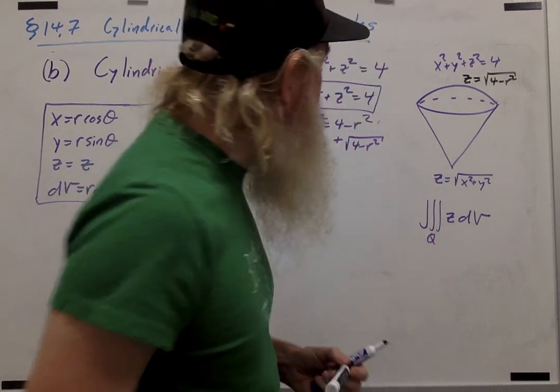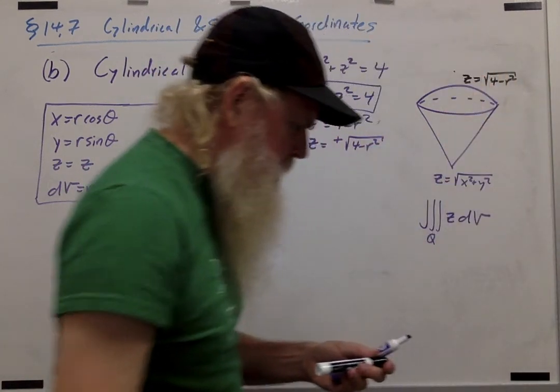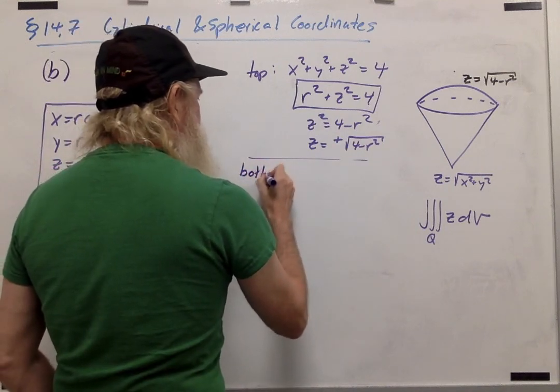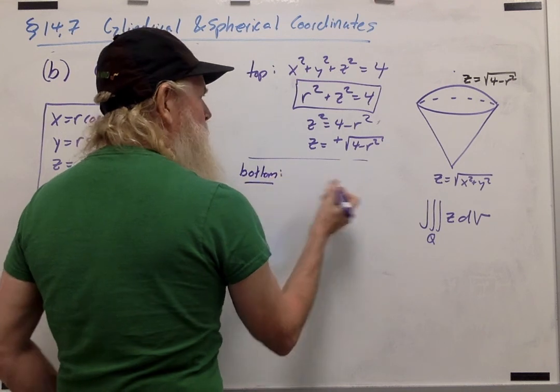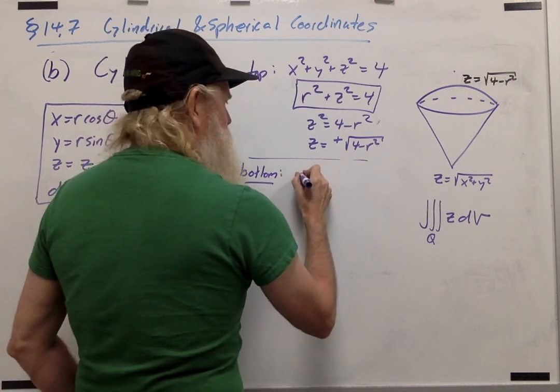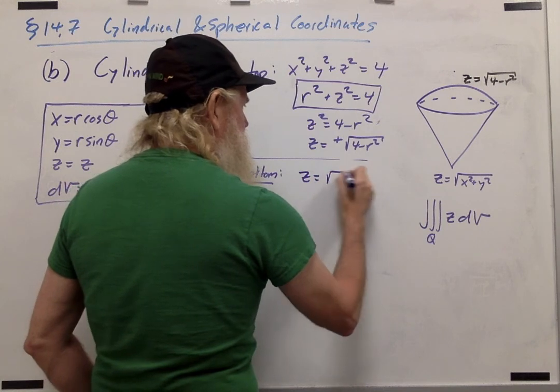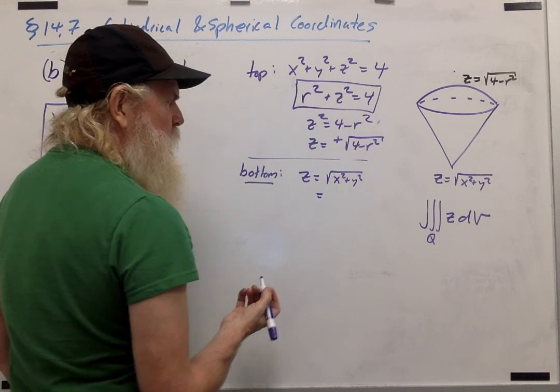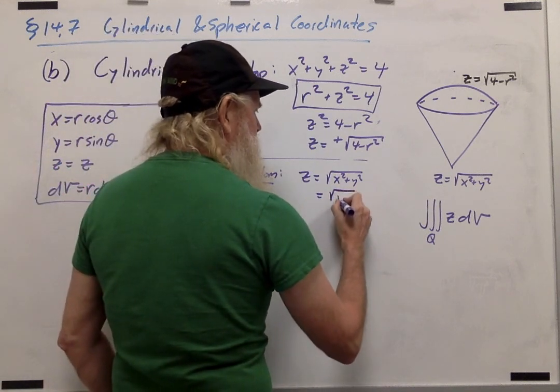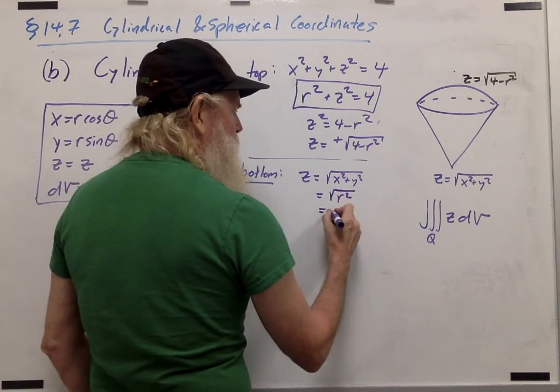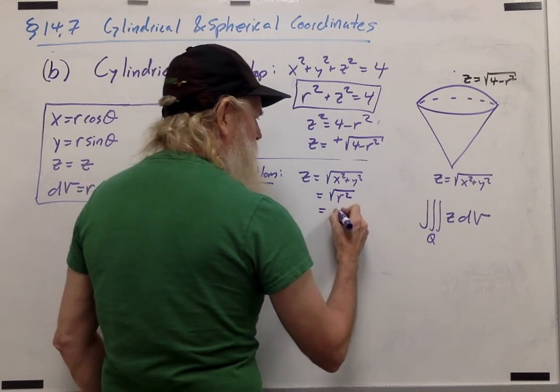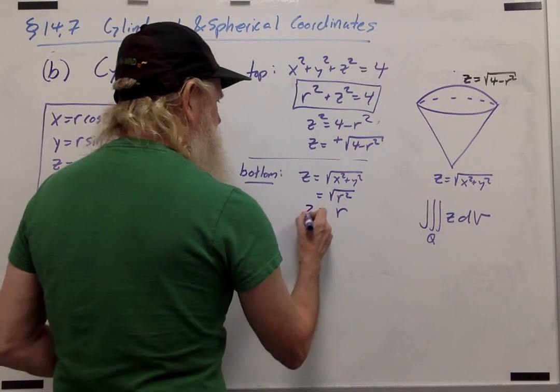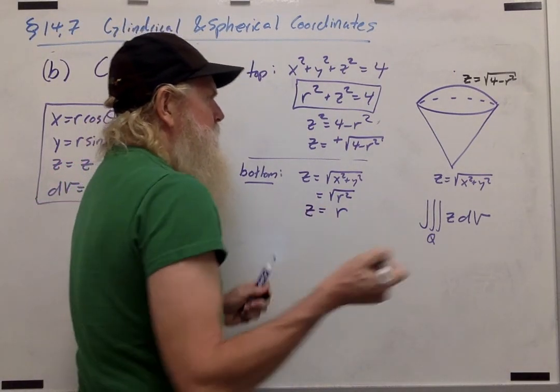For the bottom surface, which is the cone, we have z equals the square root of x squared plus y squared. But again, x squared plus y squared equals r squared. And the square root of r squared is the absolute value of r. And since we're keeping r positive, this is just z equals r. That's nice.